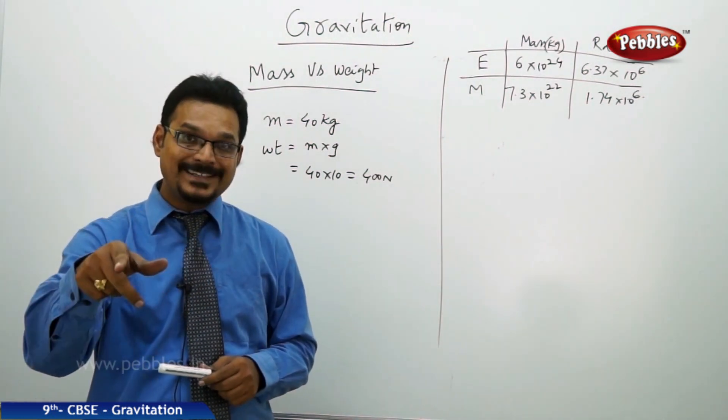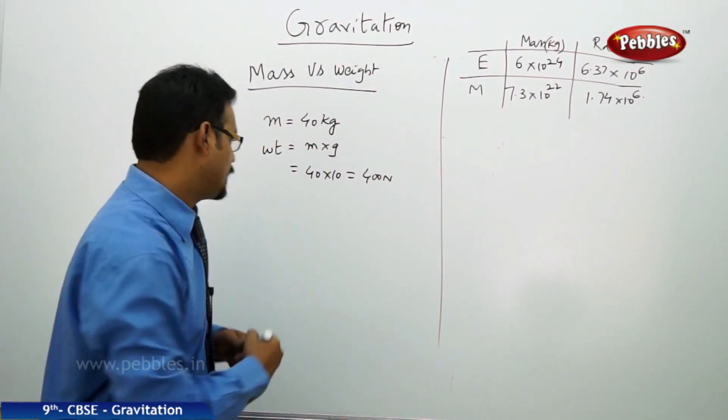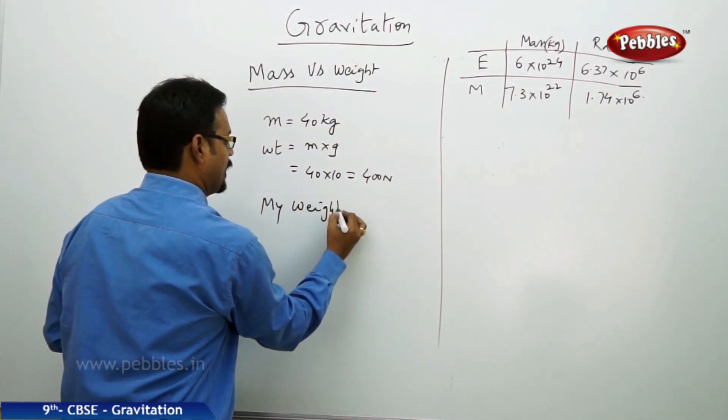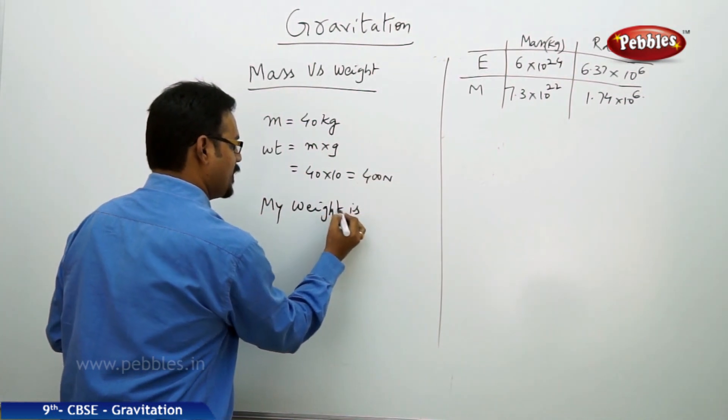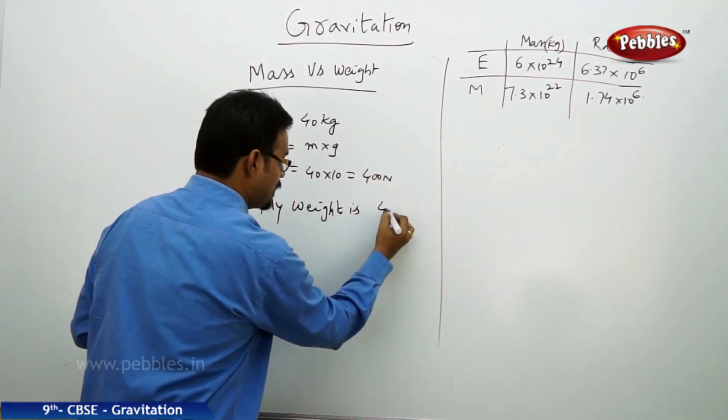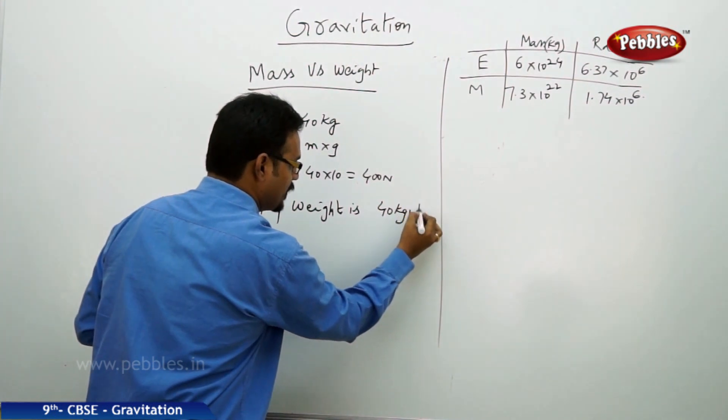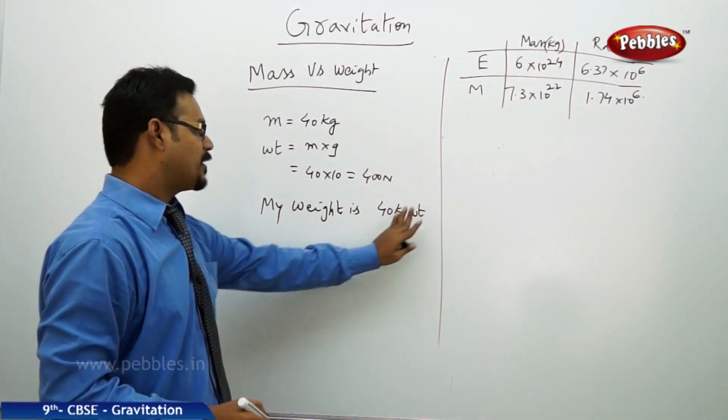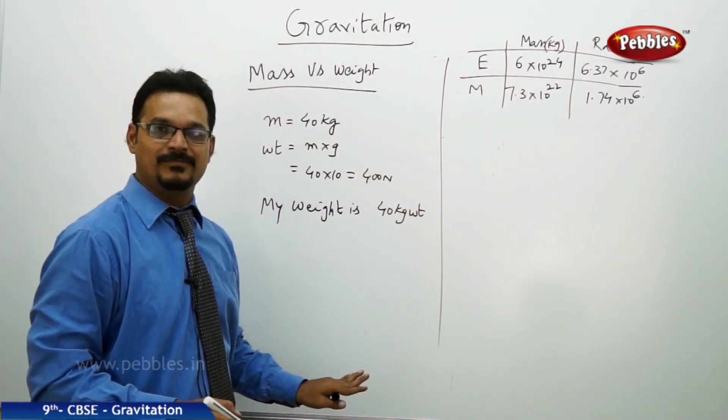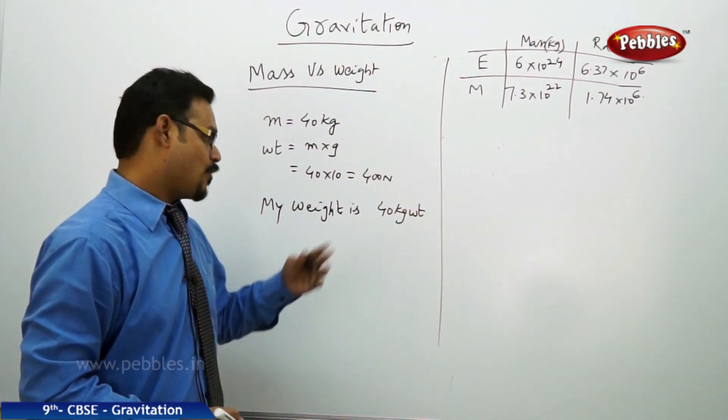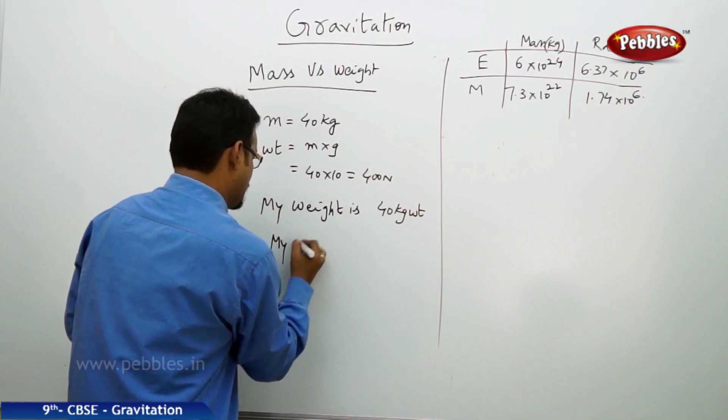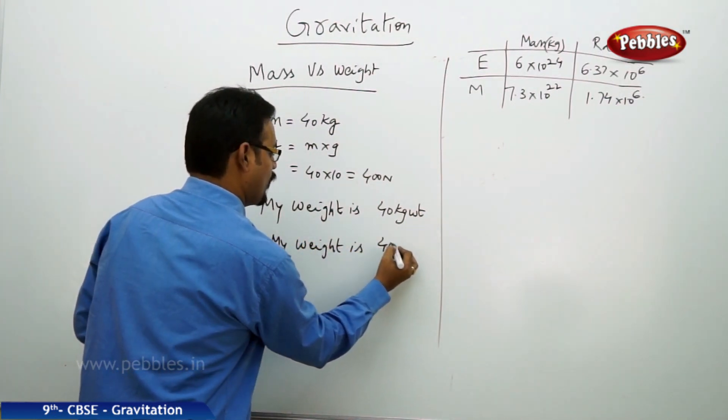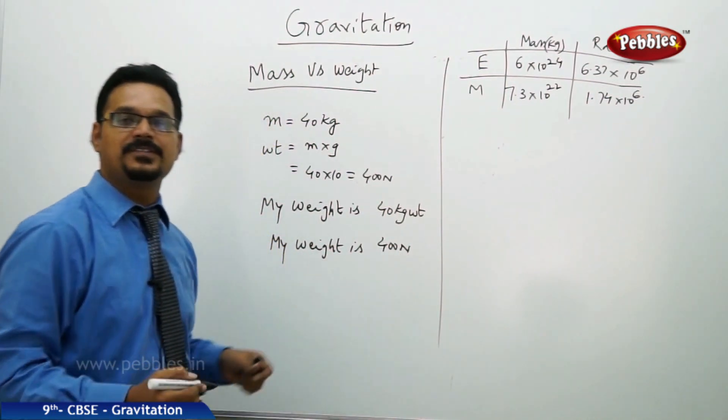But while you're writing in the book, you should make sure that my weight is 40 kg wt—you should write like this, then you are correct. But if you write my weight is 40 kg, then you are wrong because you're writing mass. Or you can write my weight is 400 newtons—both are right answers.